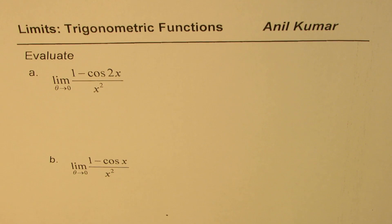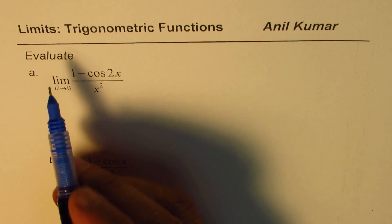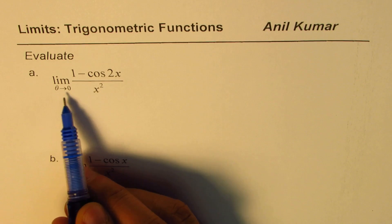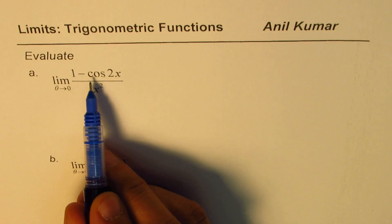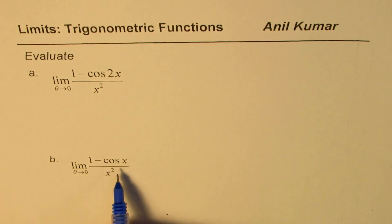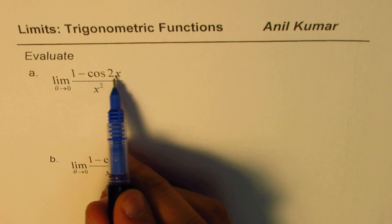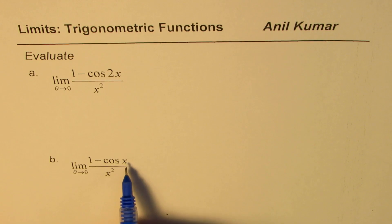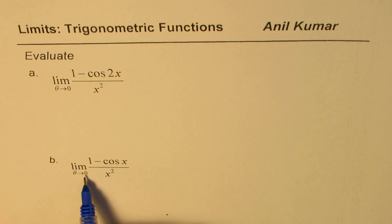So I have an example here which is we need to evaluate limit as x approaches 0 for (1 - cos 2x) divided by x squared. Now a very similar question is repeated here. The only difference is instead of 2x we have just x. So we need to find limit for (1 - cos x) over x squared when x approaches 0. Let us see how to solve such questions.